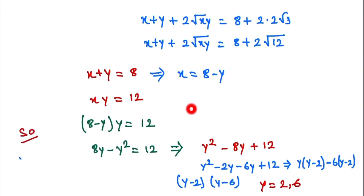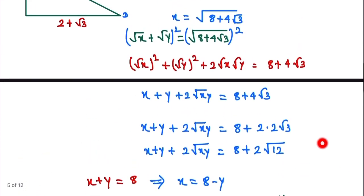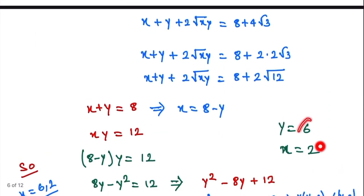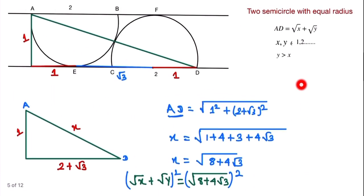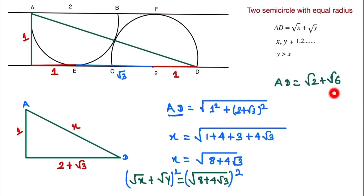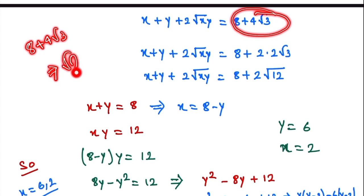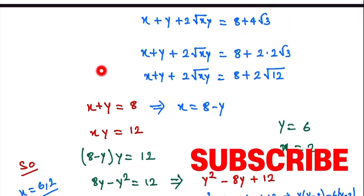With y = 6 and x = 2, our answer is AD = √2 + √6. We can verify: (√2 + √6)² = 2 + 6 + 2√12 = 8 + 4√3. This is our final answer. Thank you so much for watching. If you like the video, please subscribe.